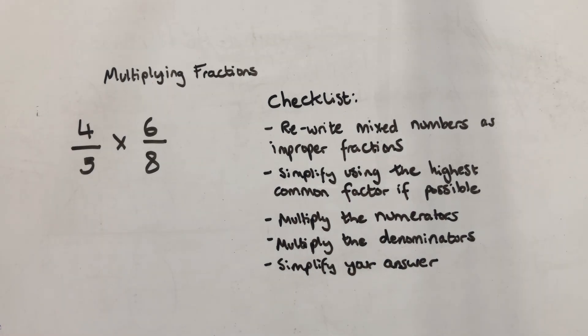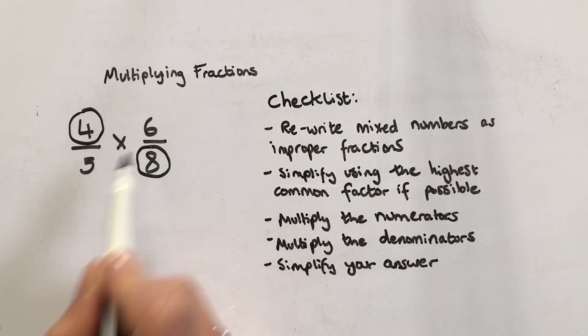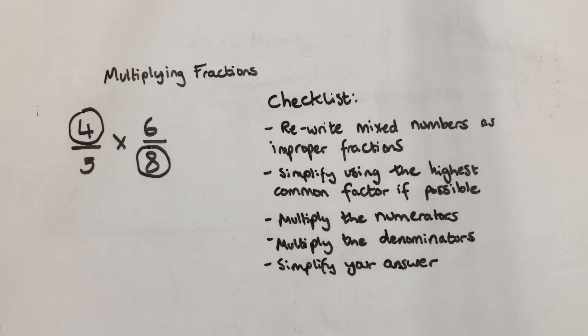For our next example we're going to do four fifths times six eighths. If I notice there is a highest common factor of four between this numerator and this denominator that are opposite each other, not in the same fraction. If you can simplify them then you can do that.